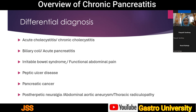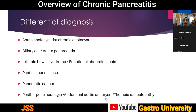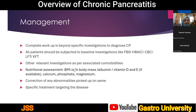The differential diagnosis of chronic pancreatitis in early phase includes acute cholecystitis, chronic cholecystitis, biliary colic, recurrent acute smoldering pancreatitis, irritable bowel syndrome, functional abdominal pain, peptic ulcer disease, pancreatic cancers, post-herpetic neuralgia, pain from abdominal aortic aneurysm, and thoracic radiculopathy, among others. While this list looks daunting for a student, experience makes differentiation more manageable in practice.